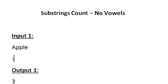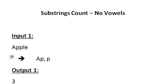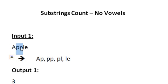First, let us generate all possible substrings of length 2 for the string 'apple'. The substrings are: 'ap', 'pp', 'pl', and 'le'.